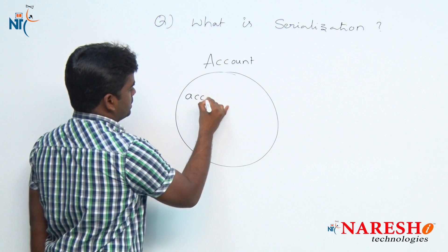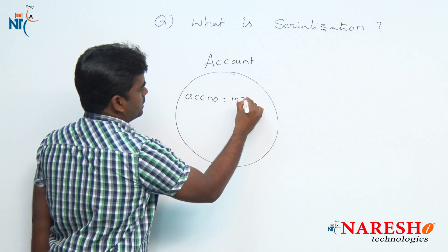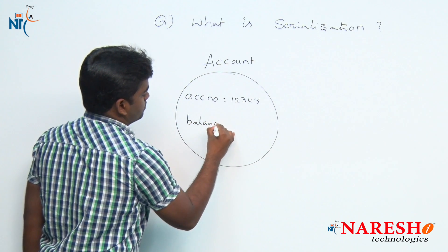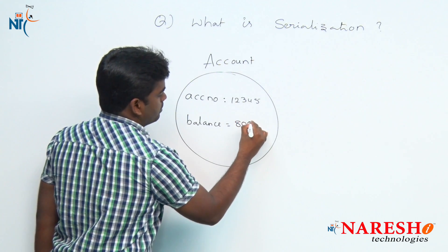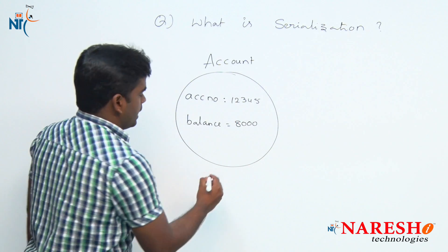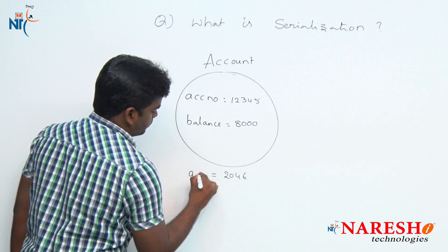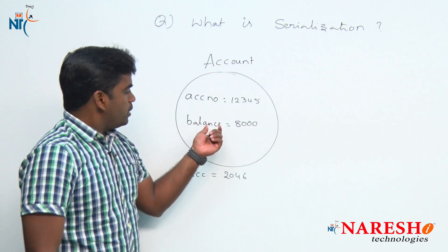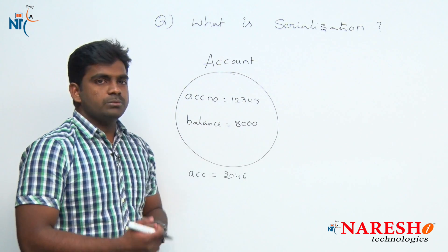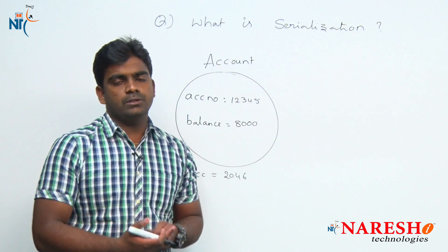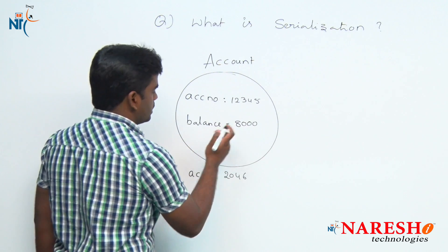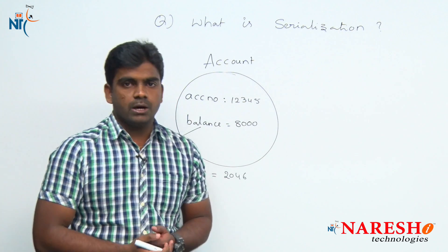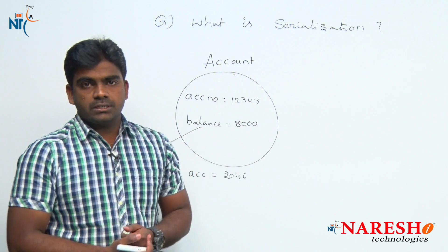Consider an Account class with an account number and a balance. Suppose initially the balance is 8000. At some location the object will be created with a reference variable. From time to time the state of the object will change — the balance value will change based on the operations we are performing on the account.